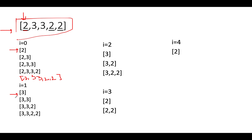Next, let's generate all subarrays starting from the second element 3: [3], [3,3], [3,3,2], [3,3,2,2]. Then subarrays starting from the third element 3: [3], [3,2], [3,2,2]. Finally, subarrays starting from the first 2 near the end: [2], [2,2], and the last element gives just [2].